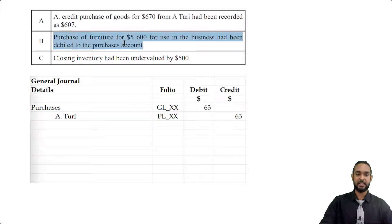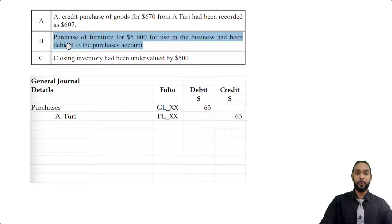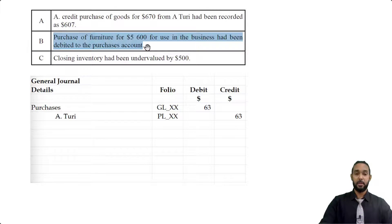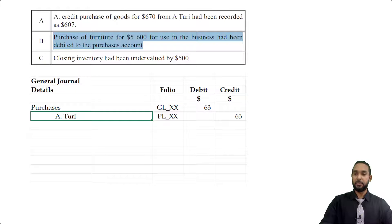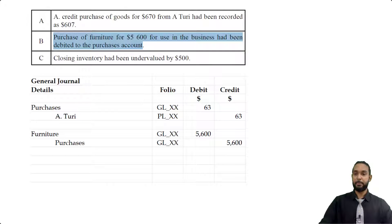Let's take a look at item B. Purchase of furniture for $5,600 for use in the business had been debited to the purchases account. The purchases account is only used to record purchases of stock or goods or inventory — furniture is none of those. Furniture is a non-current asset. When we purchase furniture we're supposed to debit the furniture account. So we debited purchases instead. We didn't debit furniture, so to fix that error we have to debit furniture. And we also have a debit in purchases that should not be there, so we debit furniture and credit purchases for $5,600.